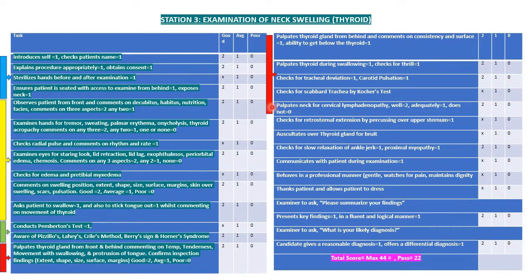Palpate the neck for cervical lymphadenopathy. Check for retrosternal extension by percussing above the sternum. Auscultate the thyroid gland for bruit. Check for slow relaxation of ankle jerks and look for proximal myopathy.